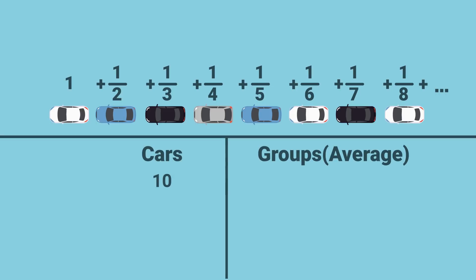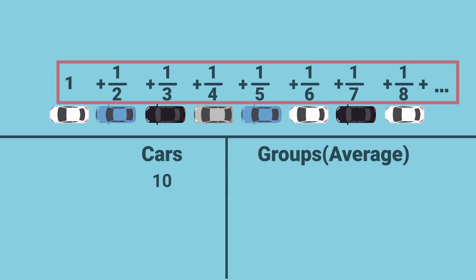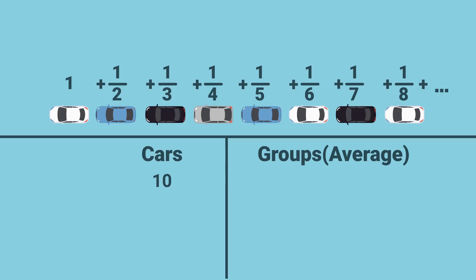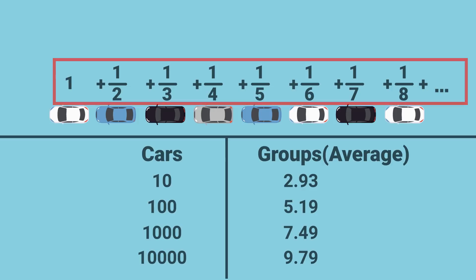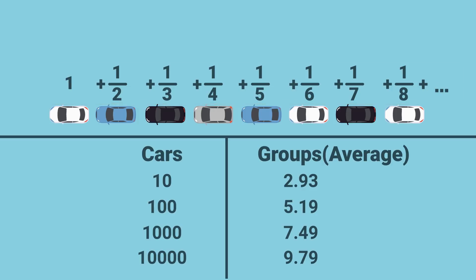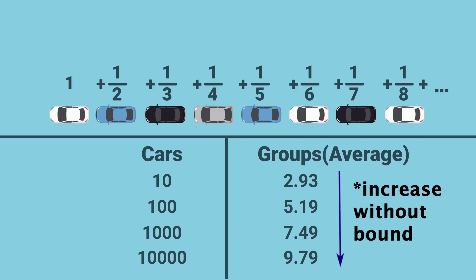If you've got 10 cars, you add up all these numbers until you get to one tenth, giving 2.93 groups on average. If we have 100 cars and sum all the way to one one-hundredth, we get 5.19 groups on average. A thousand cars yield 7.49. And at 10,000 cars, we don't even get to 10 groups on average. The series does diverge — if there were a million, billion, trillion cars, the number of groups would increase forever, but at an extremely slow rate.